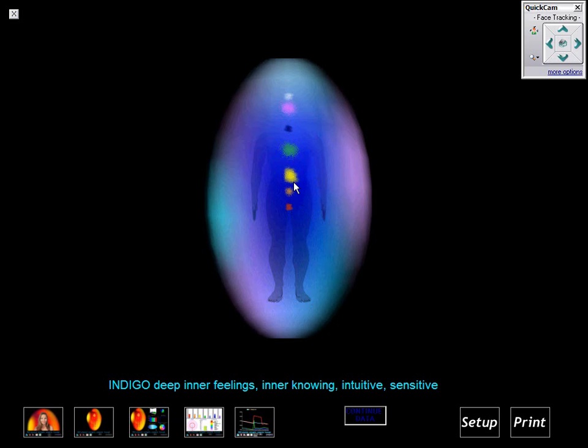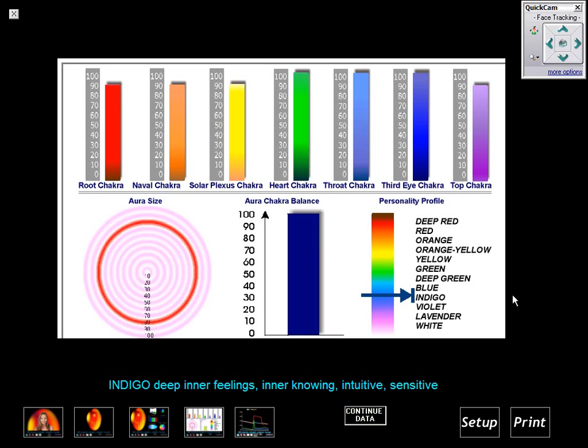We're looking specifically at the solar plexus. I want to go over to the graph page. We'll note that the energy levels of all the chakras are actually quite high. Our chakra balance is just about at 100 percent here.